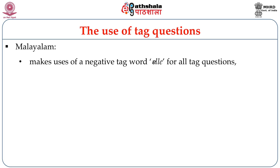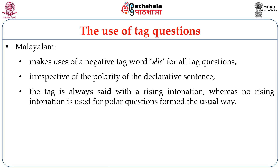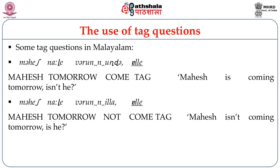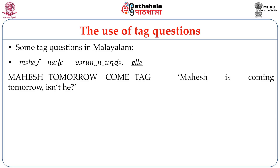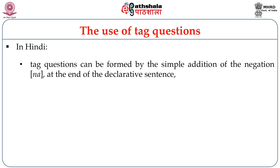Malayalam, on the other hand, makes use of a single negative tag word — 'alley' or 'aller' — for all tag questions, irrespective of the polarity of the declarative sentence. Interestingly, the tag question in Malayalam is always said with a rising intonation, whereas no rising intonation is used for polar questions in the usual way. For example, 'Mahesh is coming tomorrow, isn't he?' translates as 'Mahesh Nale Varununda Alley?' — said with a rising tone.